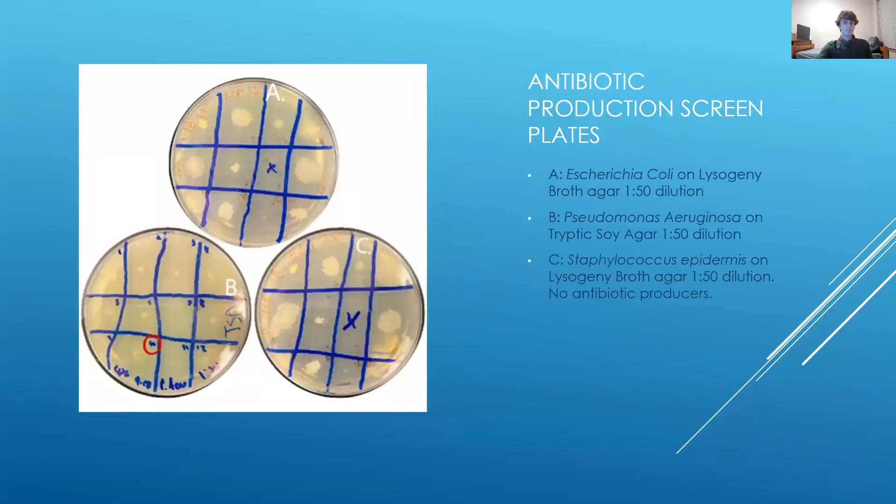The antibiotic screening was performed by adding bacteria from our master plates to three new agar plates. One of these plates was covered in E. coli, another in S. epi, and the third was covered in Pseudomonas aeruginosa. If a bacteria had an antibiotic-producing ability, a halo would form around the colony.